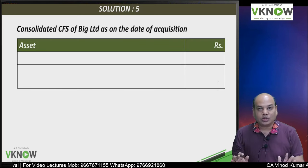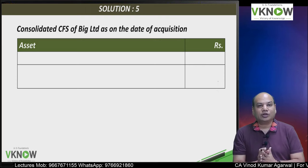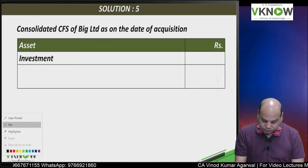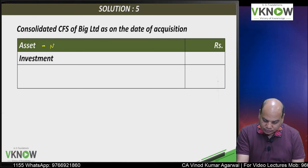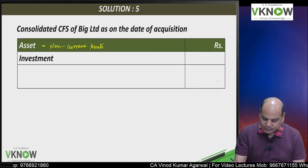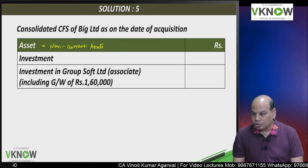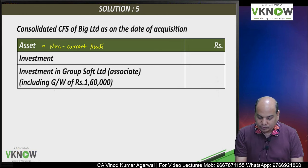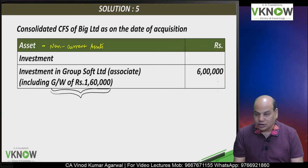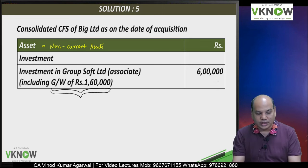The consolidated balance sheet on the date of acquisition on the asset side under non-current assets shows: investment in Group Soft Limited, associate company, with disclosure — includes goodwill 1 lakh 60,000 — and the amount is 6 lakh. This is on the date of acquisition.